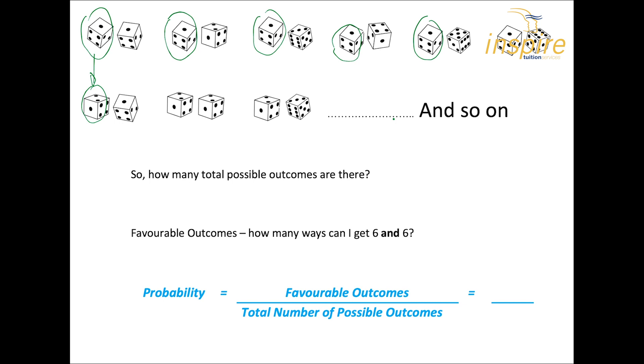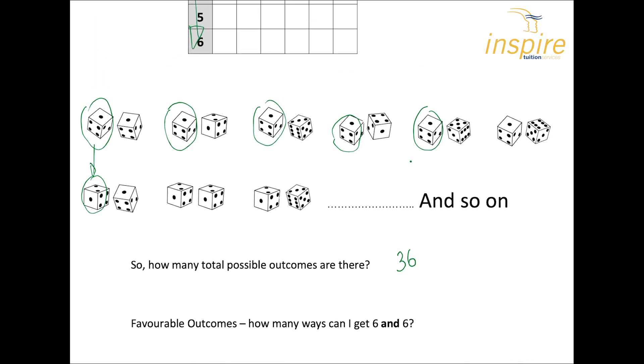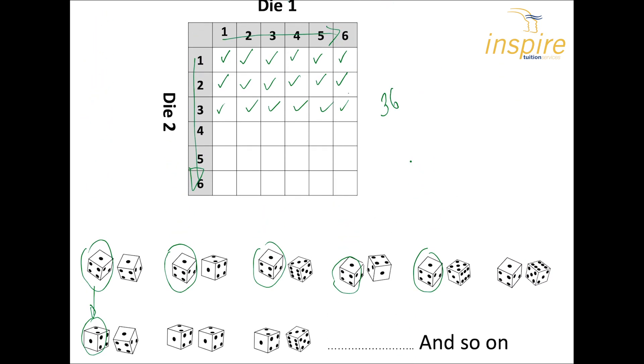Okay. So how many total possible outcomes are there? Well, there's actually 36. Favourable outcomes - how many ways can I get six and six? Well actually, if you go back to here, notice that the six and six match here. So we can only get one, one way that can happen. Now there's other ones - if you looked at three and four, so for three and four you would get a three and a four there, or you could get a three and a four here. So there would be two possible outcomes. But here for six and six, you're seeing that the answer is one.